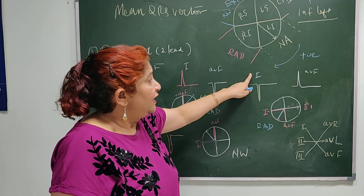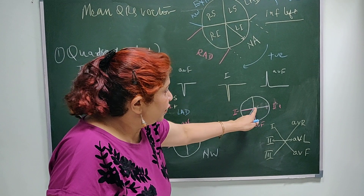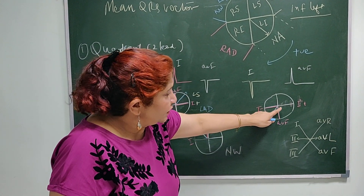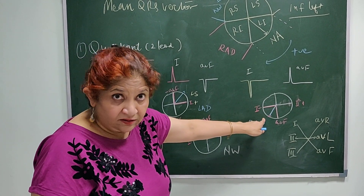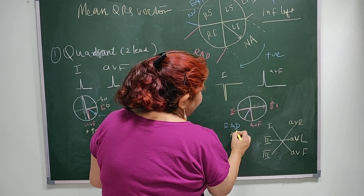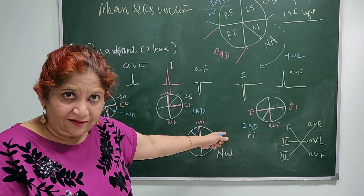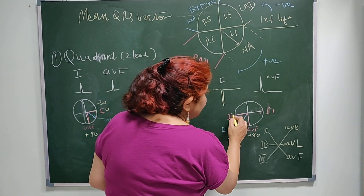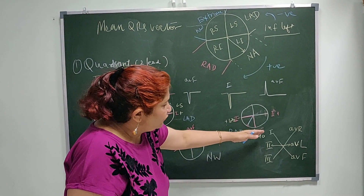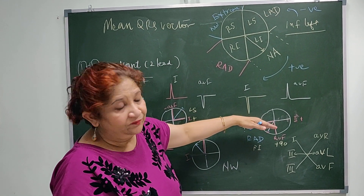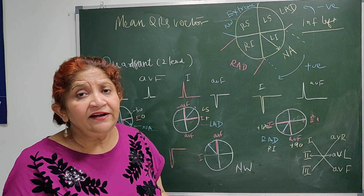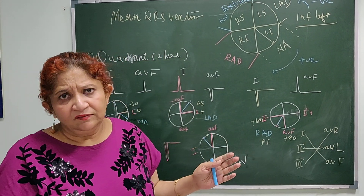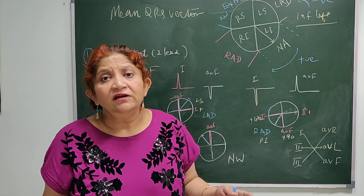In a third situation, Lead 1 shows a negative complex — the vector is moving away from Lead 1's positive pole. AVF is positive, so the vector is in the right inferior quadrant — between plus 90 and plus 180 degrees — indicating right axis deviation. There is some dispute among authors, but generally above 90 degrees is right-ward axis, and above 100 degrees is definite right axis deviation.